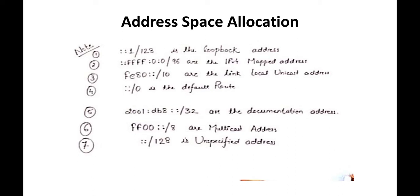The unspecified address is just one address — not for any specific work. It is not generally used. These are the addresses used for special purposes in IPv6.